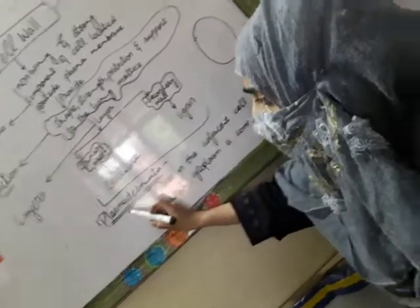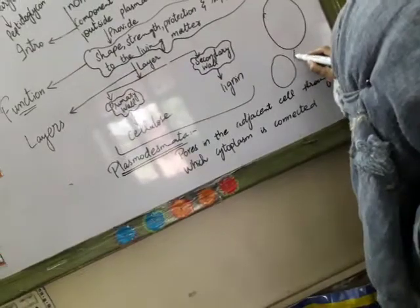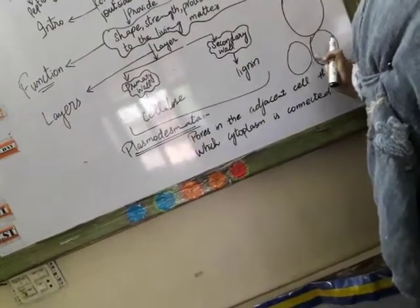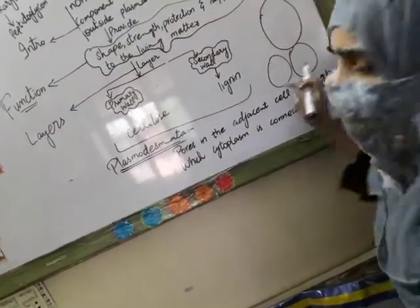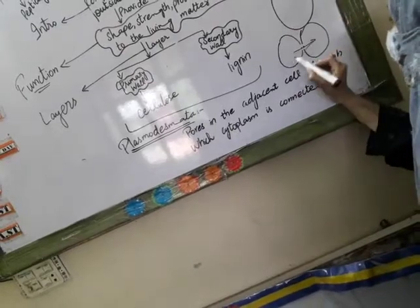Now I will tell you about plasmodesmata. Plasmodesmata are the pores. I will tell you a little bit about an example. It is basically a cell and it is the other cell. And it is basically the space through which cytoplasm goes from one cell to the other.